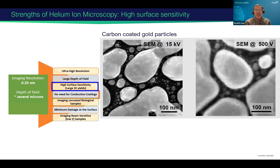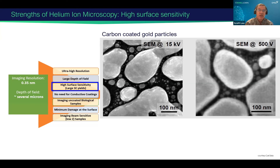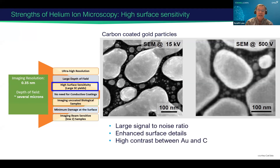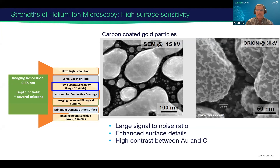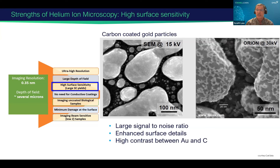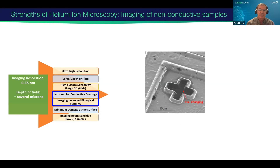Helium ion microscope is also good for looking at organic materials on top of inorganic matter. Here's an example of SEM of carbon-coated gold particles. Whereas with a helium ion microscope, you actually see the features very clearly and can see the structure of the carbon on top of the gold substrate. This is generally washed out with SEM when you have a thin film on your surface.